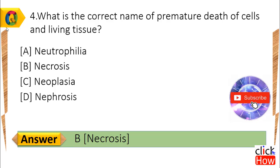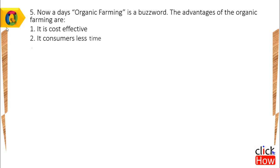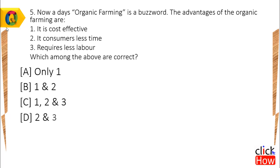Answer is B, Necrosis. Question 5: Nowadays, organic farming is a buzzword. The advantages of organic farming are: 1) It is cost effective, 2) It consumes less time, 3) Requires less labor. Which among the above are correct? Option A) Only 1, B) 1 & 2, C) 1, 2 & 3, D) 2 & 3.